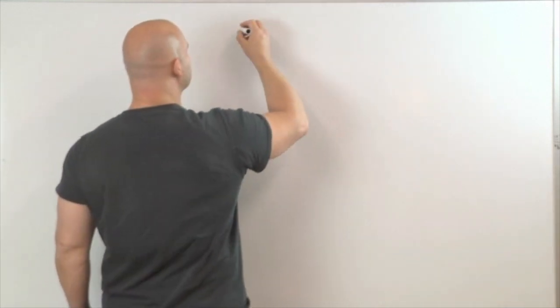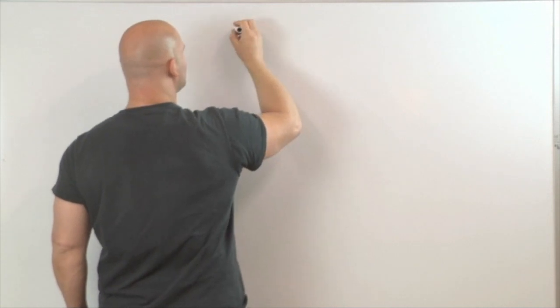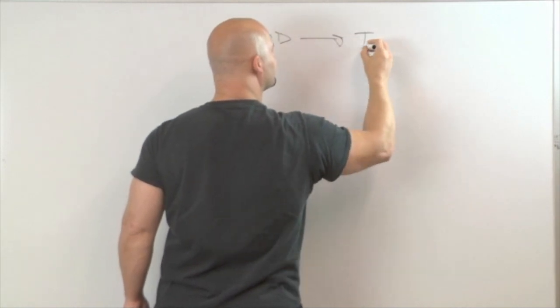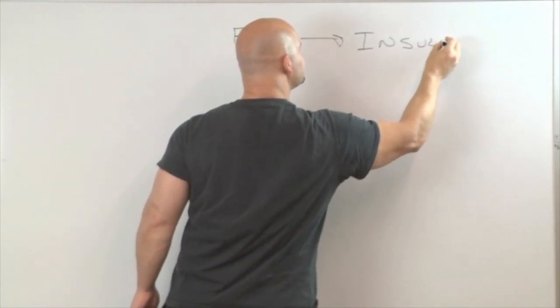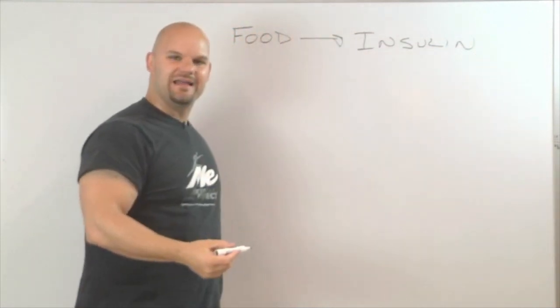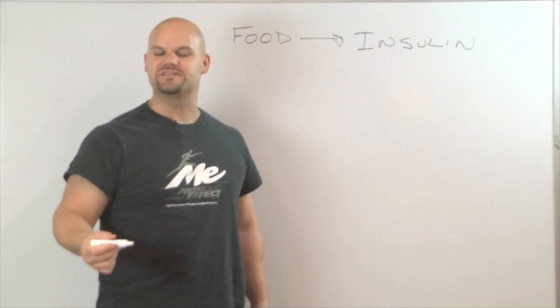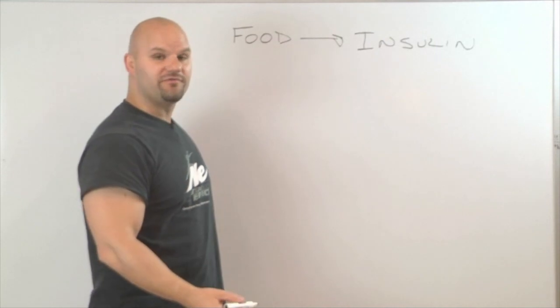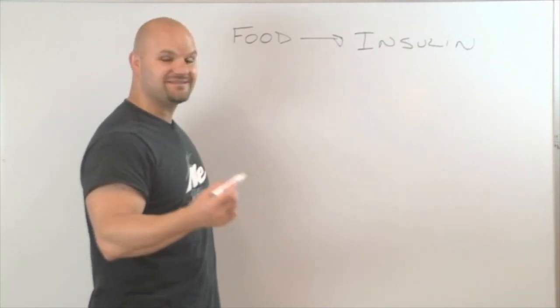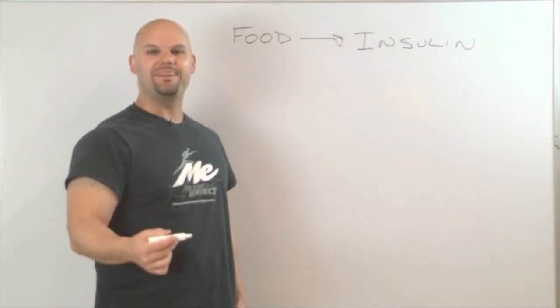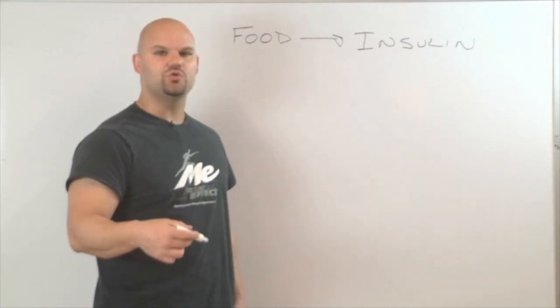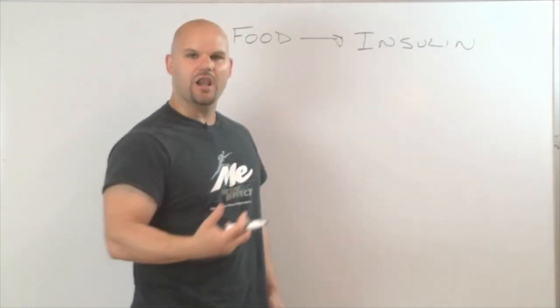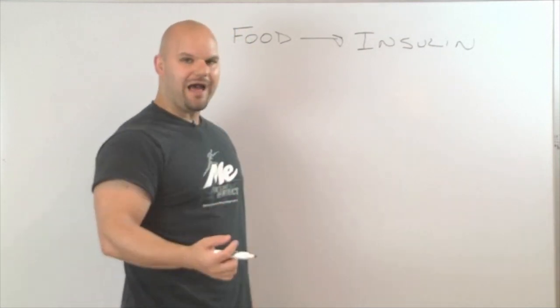One of the things you have to understand is any time you eat food, you are going to secrete the hormone insulin. So insulin is not necessarily a bad guy. Insulin helps our food get inside our cell. Its major job is to take the glucose from the food, the amino acids from that food and the fatty acids, the fat from that food, and get all those nutrients into the cell.